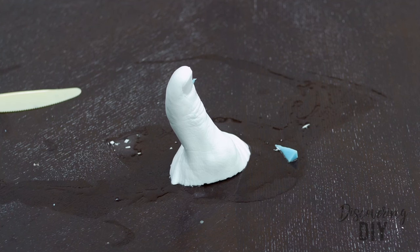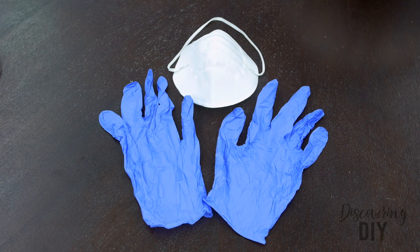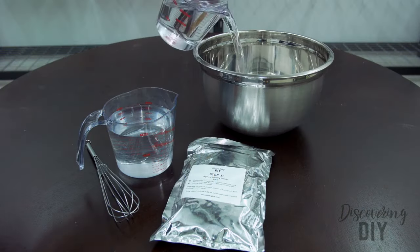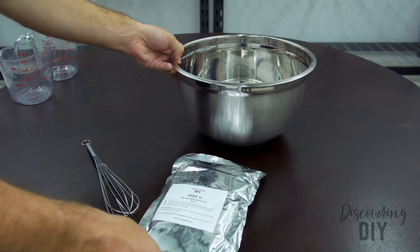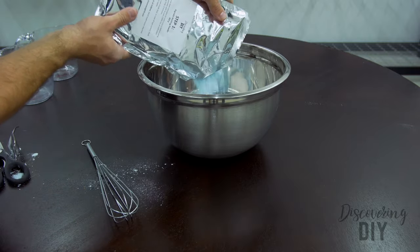We are now ready to make the mold for our hand casting. Before you begin, put on your protective mask and protect your work area with newspaper or plastic sheeting. Measure eight cups of water and pour into a large mixing bowl. Next, you are going to open the Step One Alginate Molding Powder Package and pour the powder into the large mixing bowl.